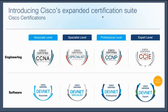Starting off with the certification design, as we already discussed about the CCMP certification design, we have associate, specialist, professional, and expert levels. There are two main categories: engineering and software. The collaboration track lies in the engineering category. At the associate level, we have only one — CCNA — as a composite. There is no separate CCNA for different tracks; we only have a CCNA composite at associate level.